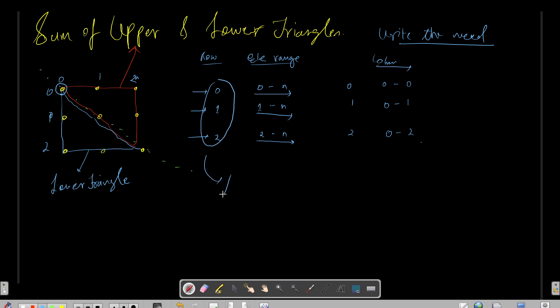I will say for i equals 0, i less than n, i plus plus. Now can you generalize this range or write this range in terms of i? Can I say this 0 to n is nothing but i to n? This 1 to n is nothing but i to n, so I can again say it is i to n. Similarly I can say i to n.